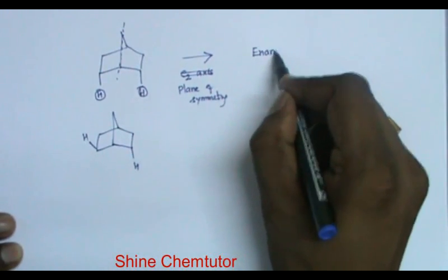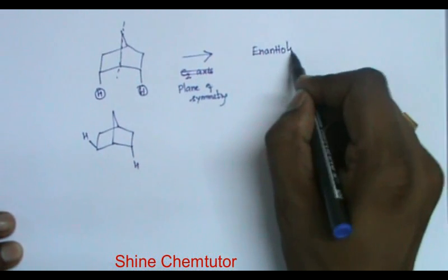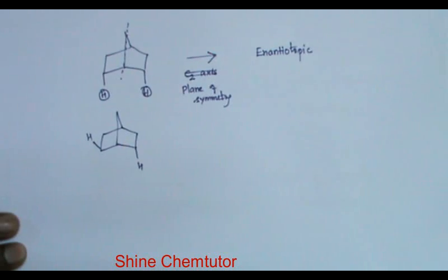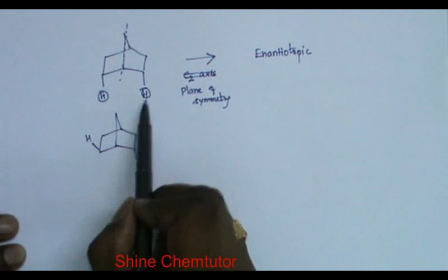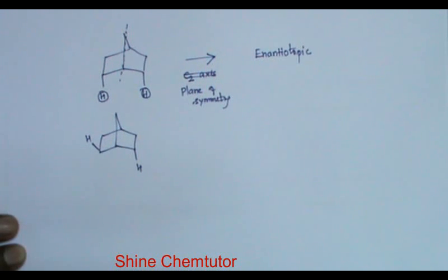When there is a plane of symmetry, the two hydrogens should be enantiotopic. You can try. You can replace the hydrogen with some other group, and similarly, this hydrogen with the same group. Whatever you get, they will be just mirror images.